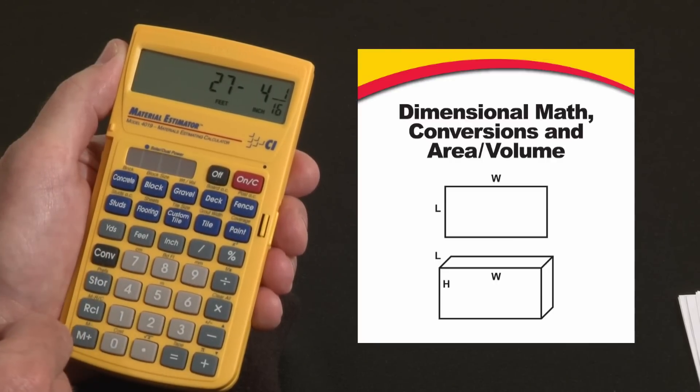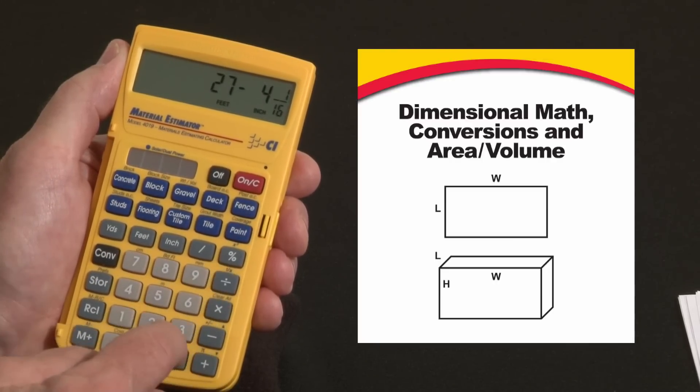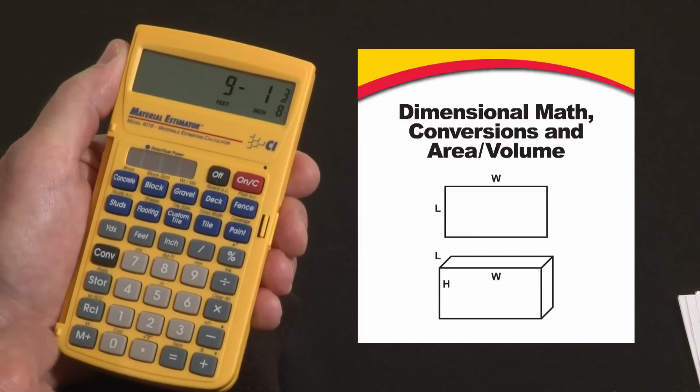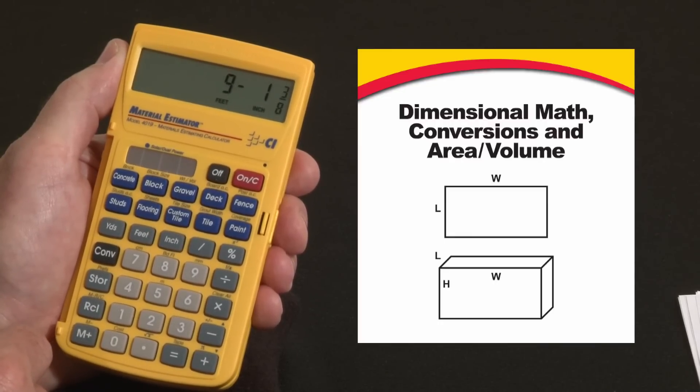Now you can add, subtract, multiply, or divide these values. Let's say we want to divide that by three for equal spacing. That'd be nine, one, and three-eighths. Or maybe we want to multiply it.